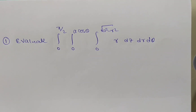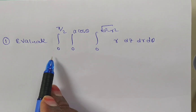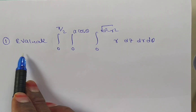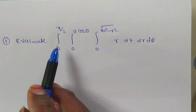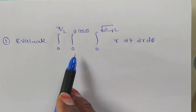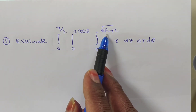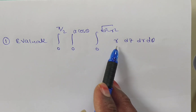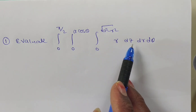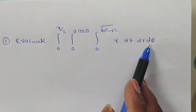Hi friends, in this video we are solving a problem from the triple integral. This topic was chosen from multiple integrals. We have to evaluate the integral from 0 to pi by 2, integral 0 to a cos theta, integral 0 to square root of a square minus r square, of r dz dr d theta.